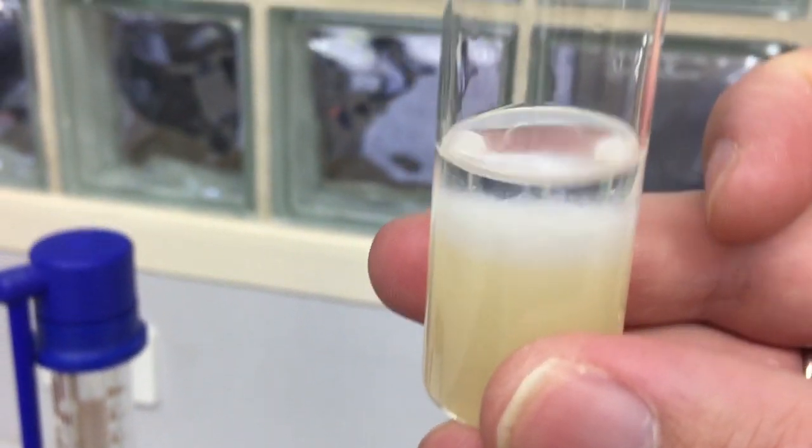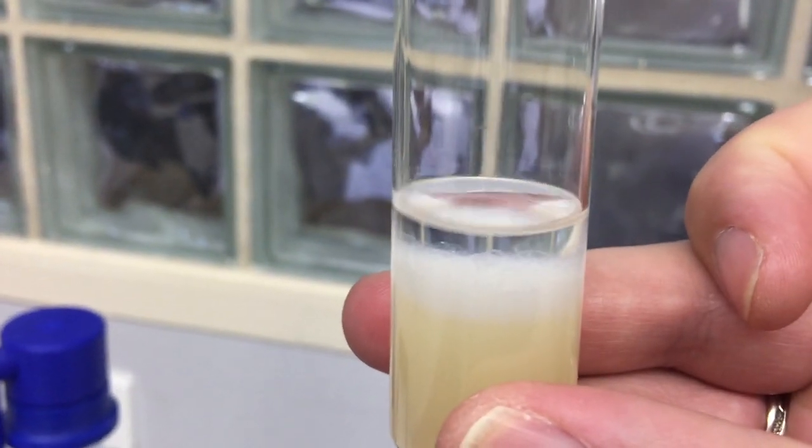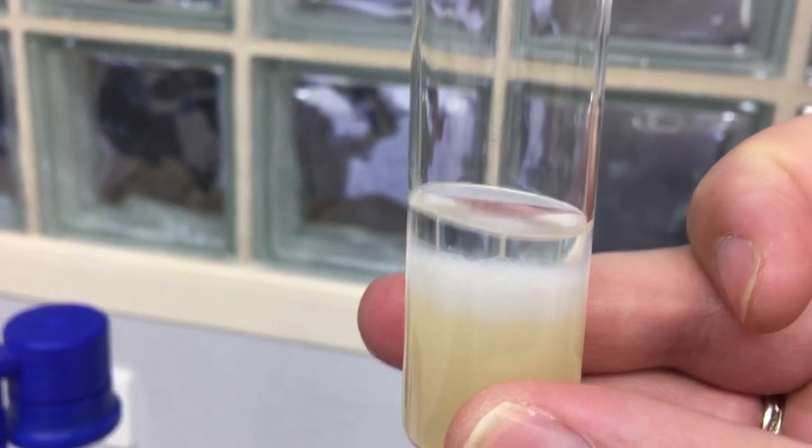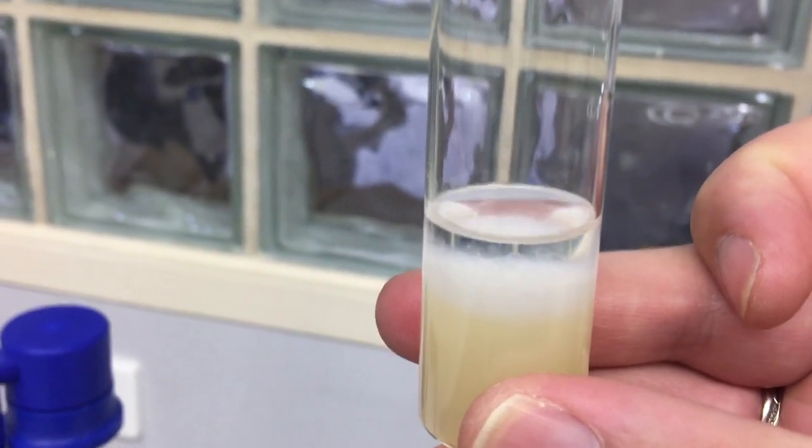And hopefully we will get some DNA precipitated at the boundary layer between the solution and the methylated spirits. And you can see a little bit just there, that kind of milky, filmy sort of layer, that is our wheat germ DNA precipitate.